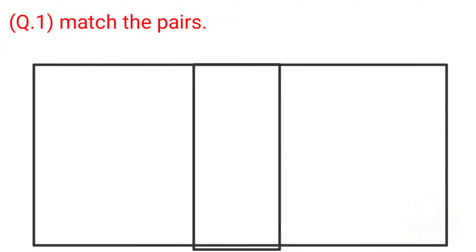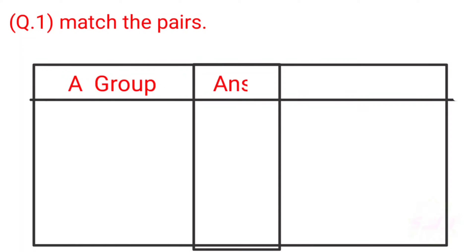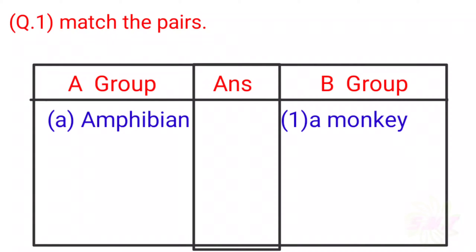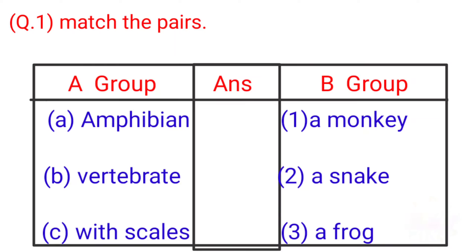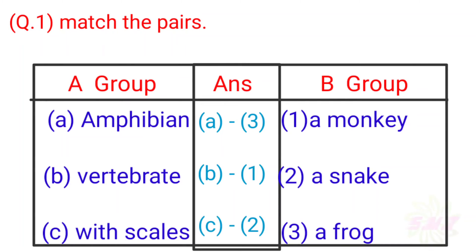Question 1: Match the Pairs. Group A to Group B. A: Amphibian, B: Werther Barrett, C: With Scales. Options — 1: A Monkey, 2: A Snake, 3: A Frog. Answers: A–3, B–1, C–2.